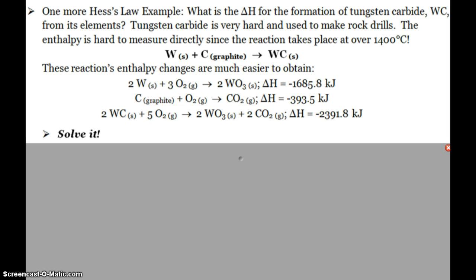Alright, so there's two different ways you can do this. One, you can see that since I only need one tungsten and this reaction has two, I'm going to multiply this by one half. And again, since I only need one tungsten carbide, but this reaction has two, I'm going to multiply this reaction by half.